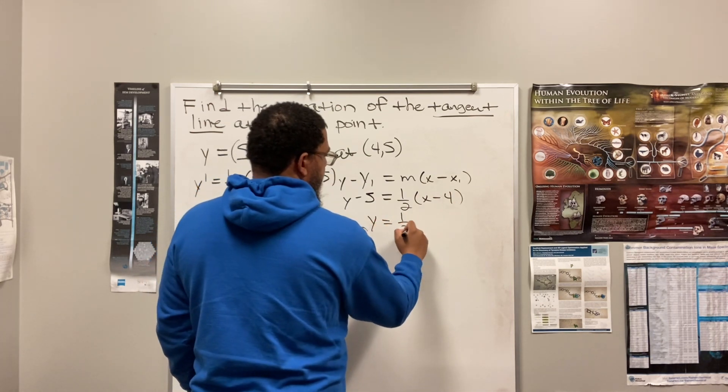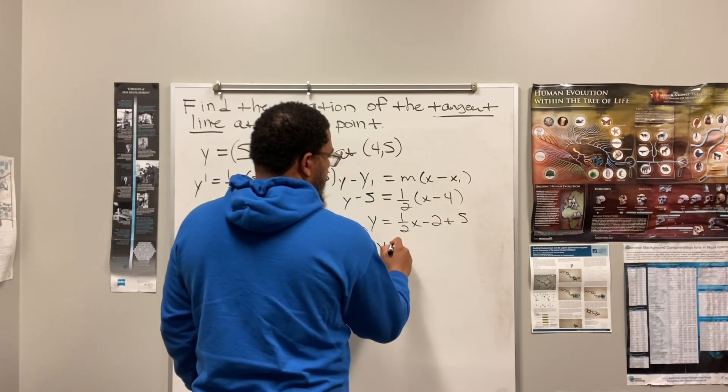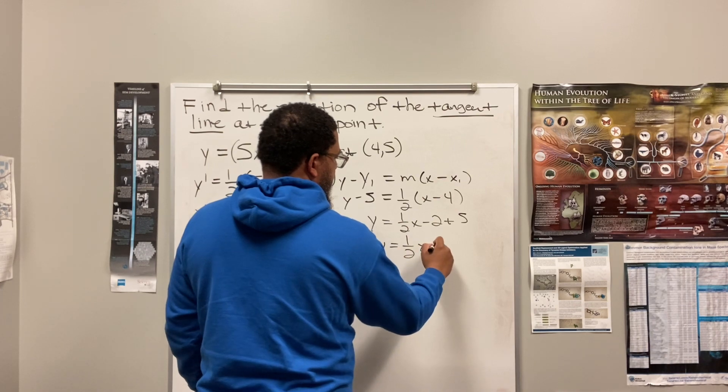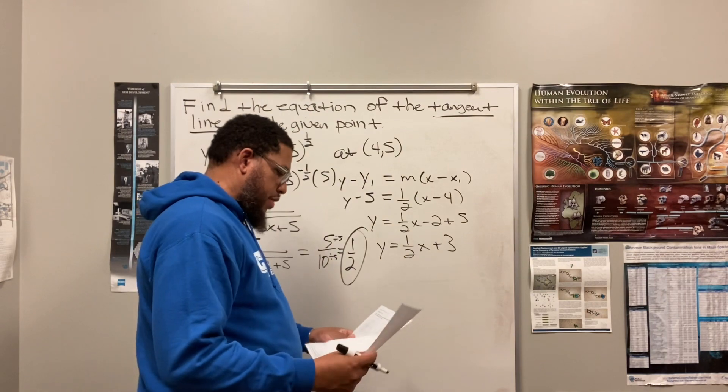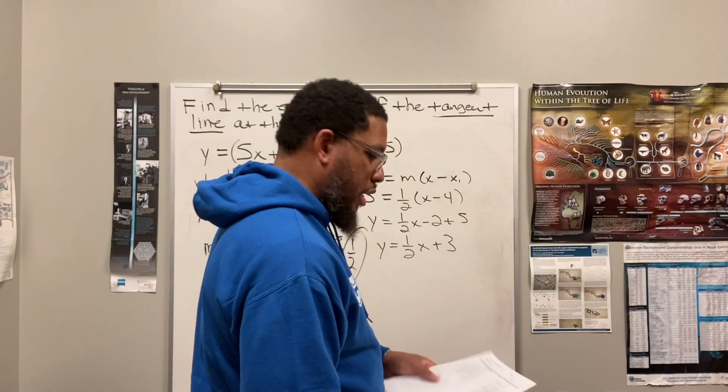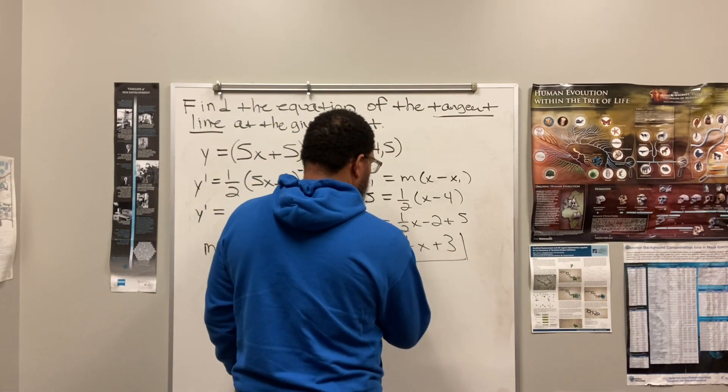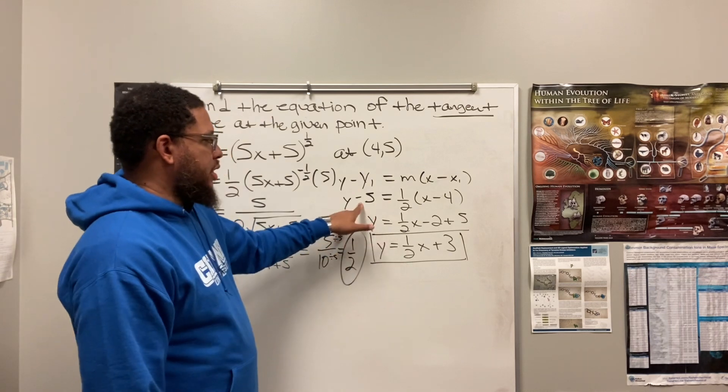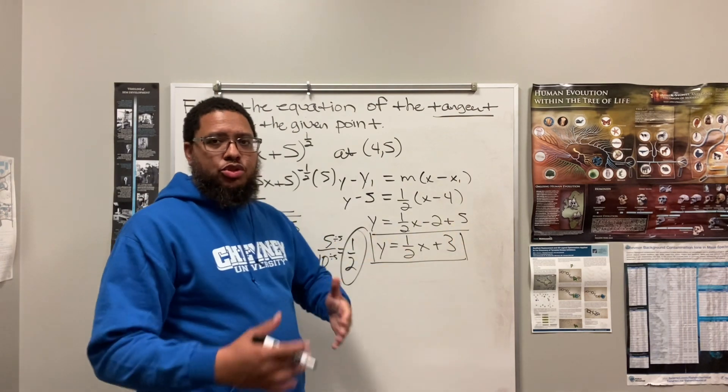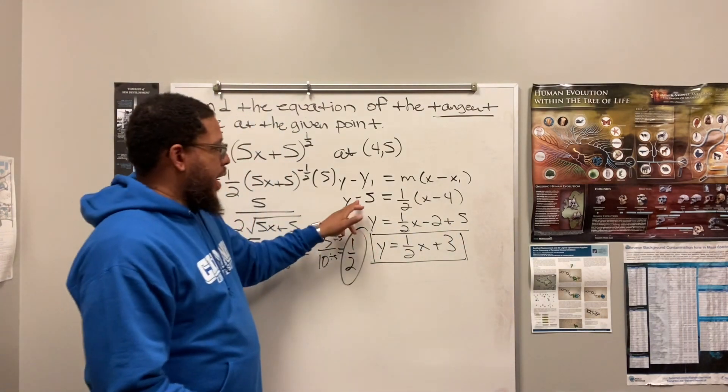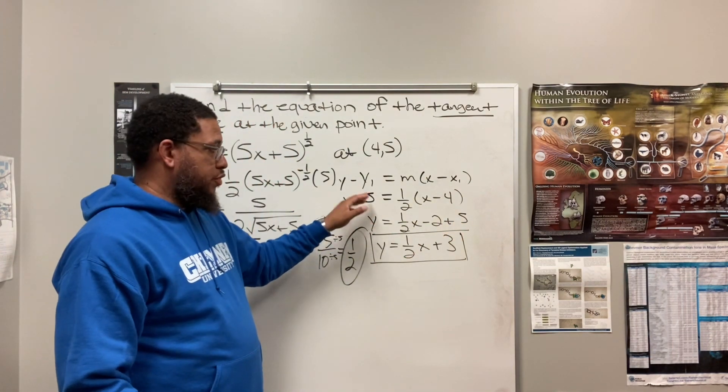So, then I got Y equals 1 half X minus 2 plus 5. Y equals 1 half X plus 3. Y is equal to 1 half X plus 3. And I love it when a plan comes together. So, now, but how did I get all this, though? Let me explain this a little bit. Make sure you understand this. So, what happened to the negative 5? I transposed it. Moved it over to the other side of the equation. That's why it's plus 5. It's the same thing as using the addition property of equality. Adding 5 on the left side, adding 5 on the right side. End up with plus 5 over here. Negative 5 plus 5 is 0. That's why it's going from on the left side.